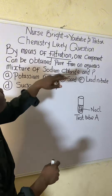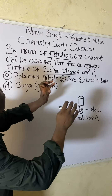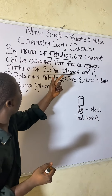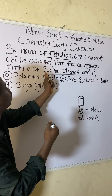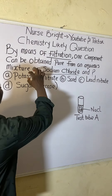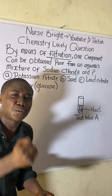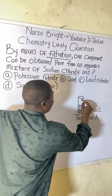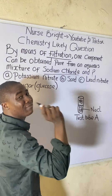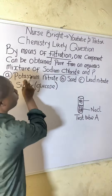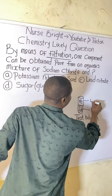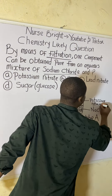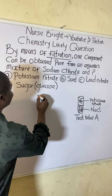The question asks: which component, out of all the options, can be obtained pure when mixed with sodium chloride in an aqueous mixture? Let's say option A — potassium nitrate — is mixed with sodium chloride in test tube A. Now let's draw test tube B to see what happens during filtration.